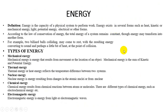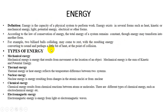First we should know the basic forms. Energy is nothing but the capacity of a physical system to perform work. Energy exists in several forms such as heat, kinetic, mechanical, light, potential and other forms. According to the law of conservation of energy, the total energy in a system remains constant though it may transform from one form to another. For example, two billiard balls colliding may come to rest and the resulting energy is converted to sound and a little bit of heat due to friction from the collision.